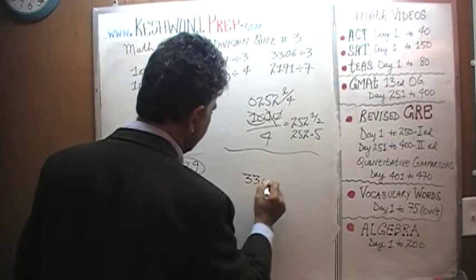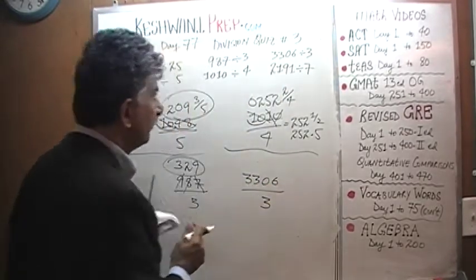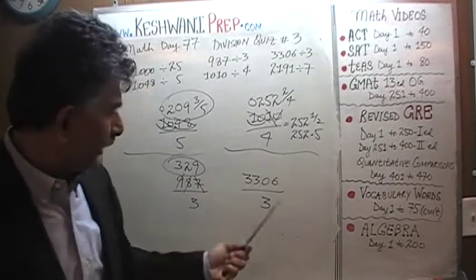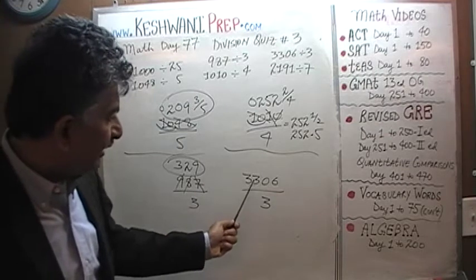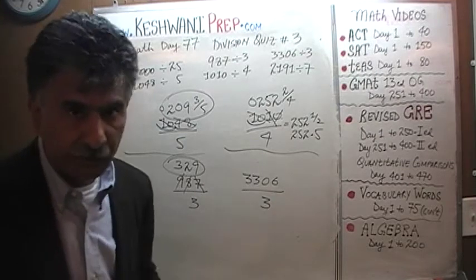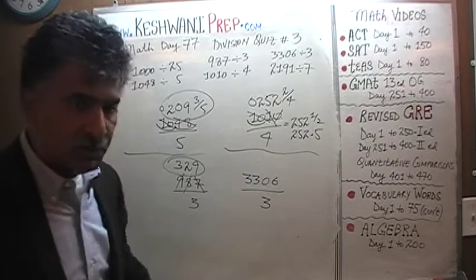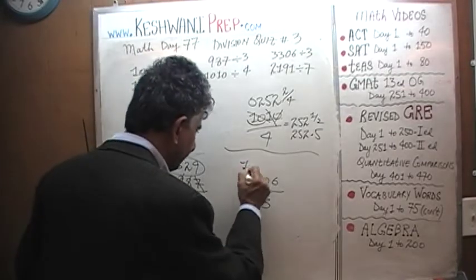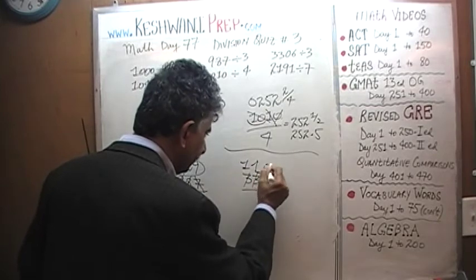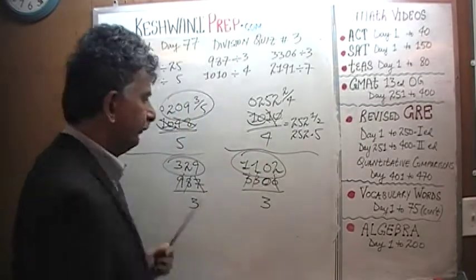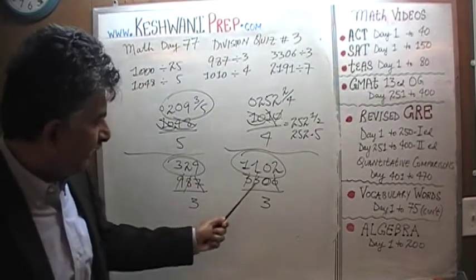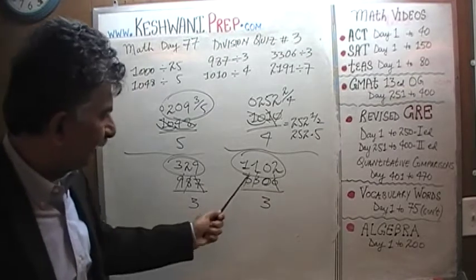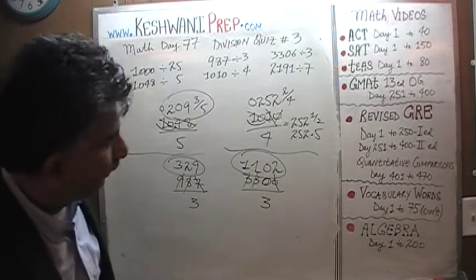Next: 3,306 divided by 3. This is very easy — we can tell this number is divisible by 3 because each individual digit is divisible by 3. So: 3 has one 3, 3 has one 3, 0 has no 3, and 6 has two 3s. The answer is 1,102 even.